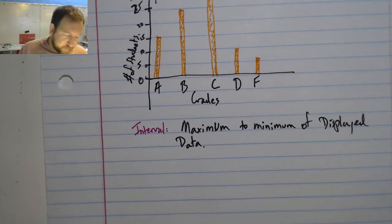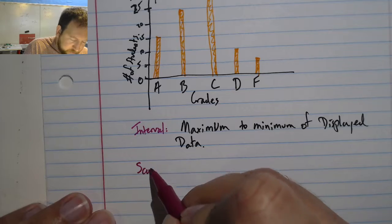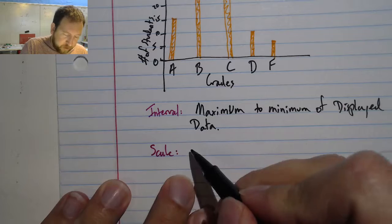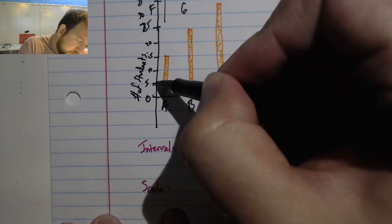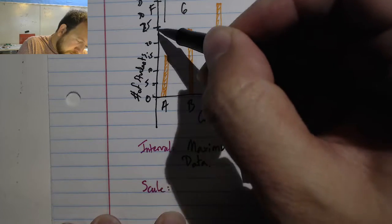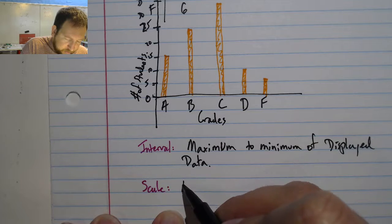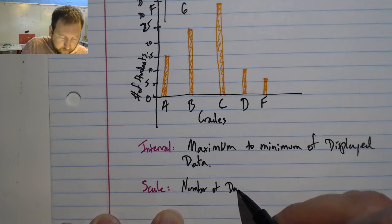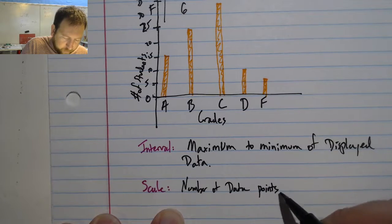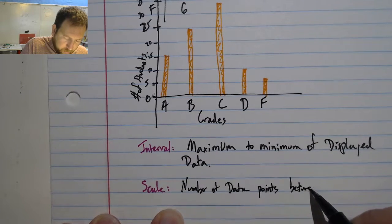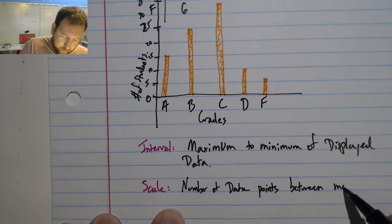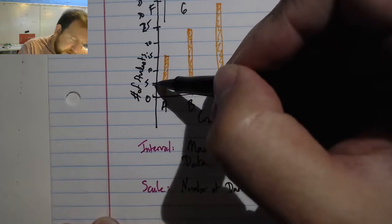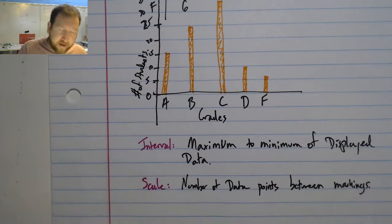One other word that I want to mention is the scale of this graph. And the scale is the data between my two points. It's the number of data points between my markings. In this case, my scale is 5 because there's 5 between every tick.